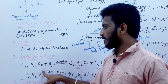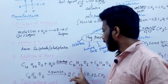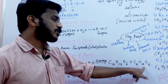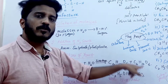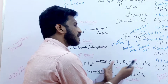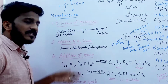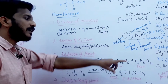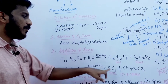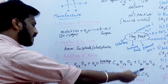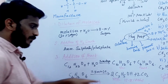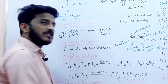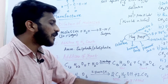Invertase converts the sucrose molecule C12H22O11 into two molecules of C6H12O6 — that is, glucose and fructose. Then Zymase acts on glucose or fructose and converts it into two molecules of C2H5OH plus 2CO2 gas. So yeast produces two molecules of ethanol plus 2CO2.